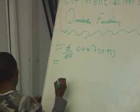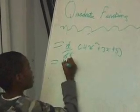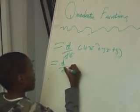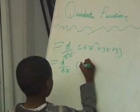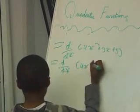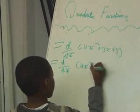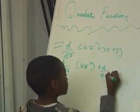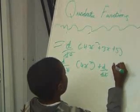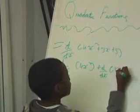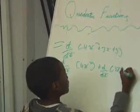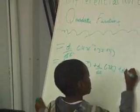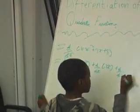On the second line, it will be d/dx open bracket 4x² close bracket, plus d/dx open bracket 3x close bracket, plus d/dx open bracket 5 close bracket. This will equal...